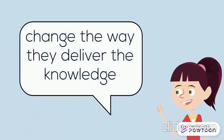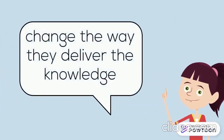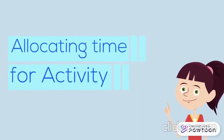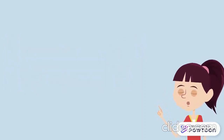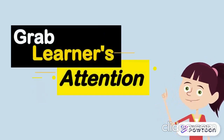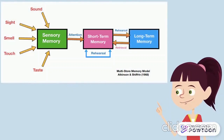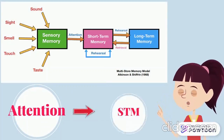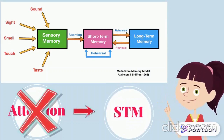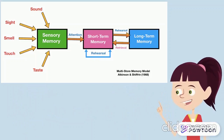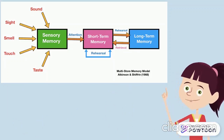To solve this, the educator needs to change the way they deliver knowledge to their learners. For example, asking more questions and allocating more time for class activities might allow more enrichment and interaction, thereby grabbing the attention of learners. According to the multi-store memory model, attention is needed for information to be stored in short-term memory. Hence, if the learner does not pay attention during online class, no knowledge will be stored.